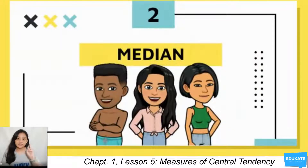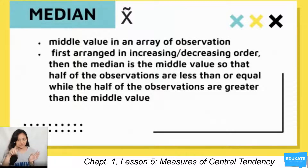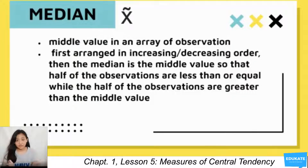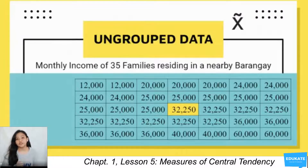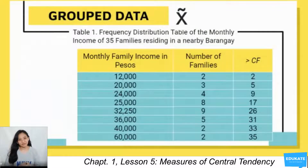The second measure of central tendency is the median, denoted by x with a tilde symbol. It is the middle value in an array of observations. Your data should be arranged in ascending or descending order. The median is the middle value such that half of the observations are less than or equal to it and half are greater than or equal to it. For the monthly income of 35 families listed from lowest to highest, the middle value is 32,250.